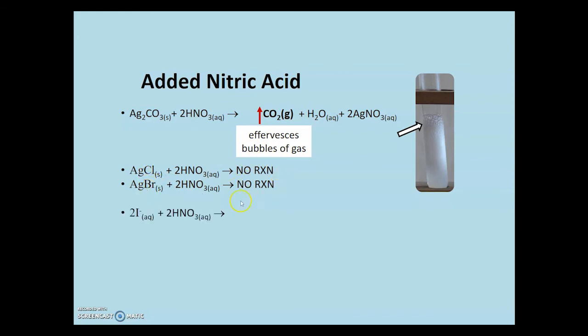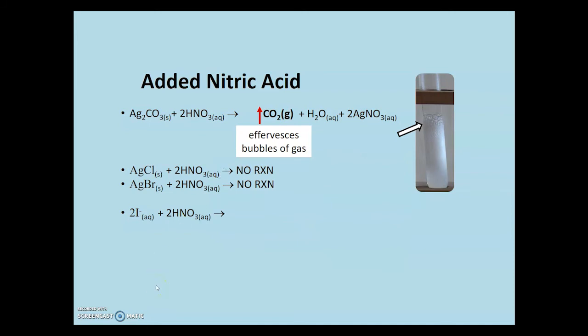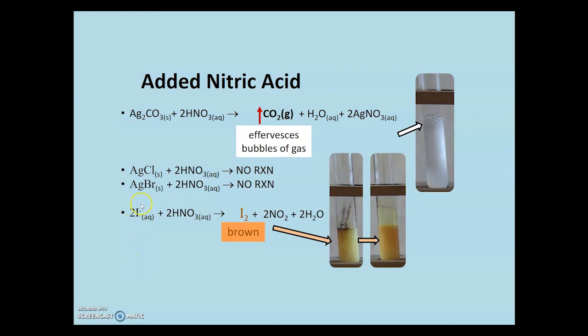But interestingly, with the iodide, it formed this brownie color. Here we have the excess iodide in solution that's reacting with the nitrate component of the acid, forming iodine. We call this a redox reaction. The iodide ion has lost an electron to form iodine. This process is called oxidation and redox reactions are a video on their own.